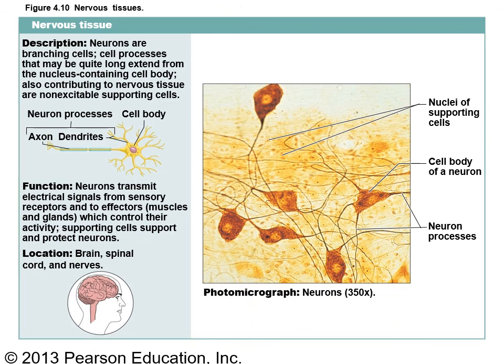Nervous tissue is the fourth and last primary tissue type. Neurons have a nerve cell body with incoming processes called dendrites and a single outgoing axon. Nervous tissue is found in the brain, spinal cord, and nerves, and its job is to carry electrical impulses from one place of the body to another. We'll be spending quite a few chapters on nervous tissue.